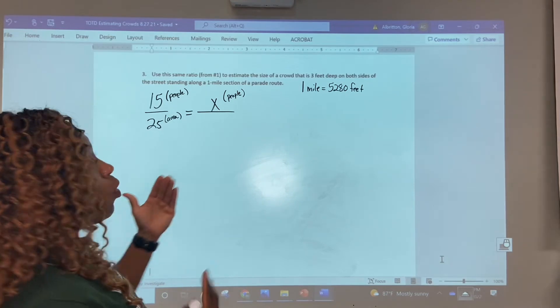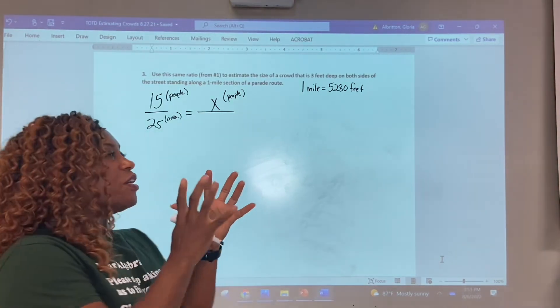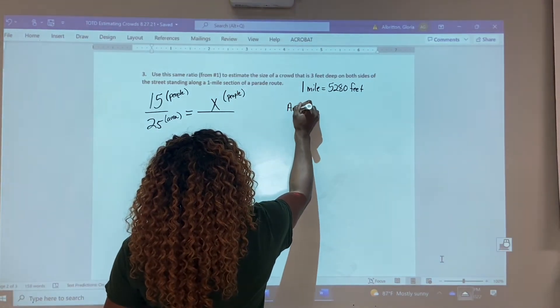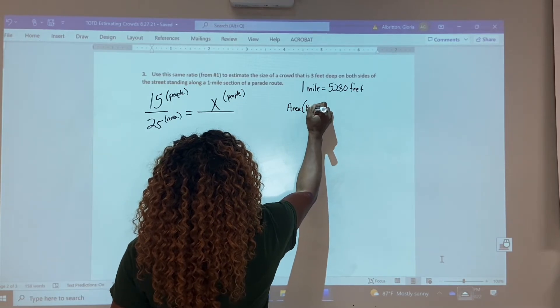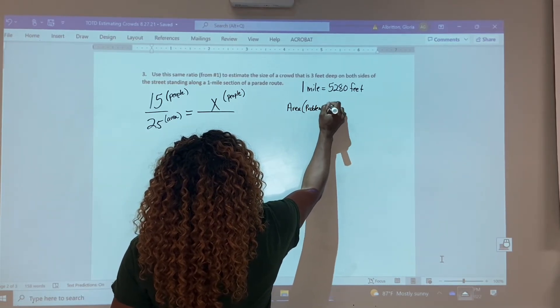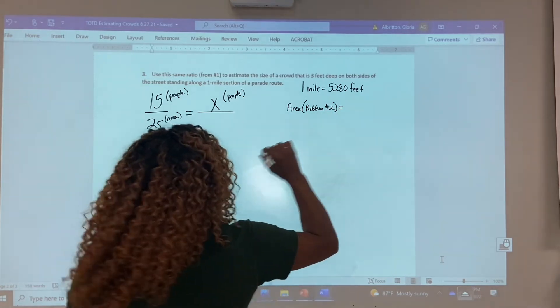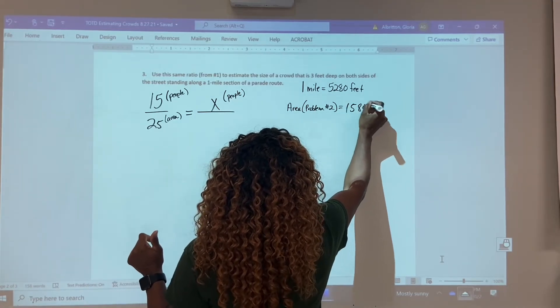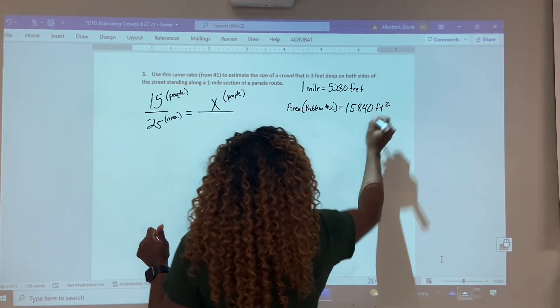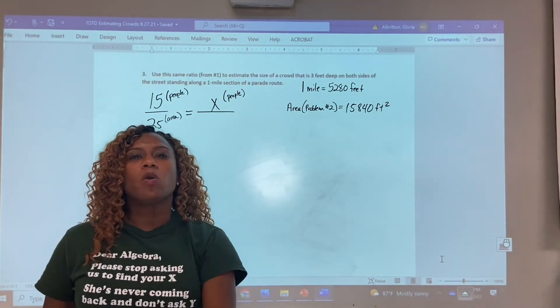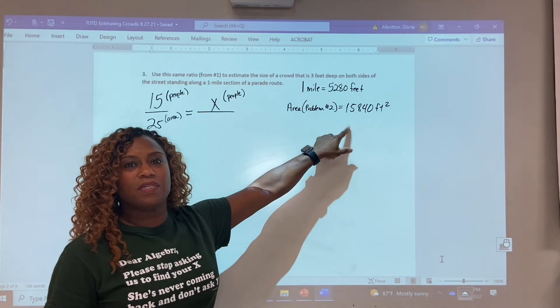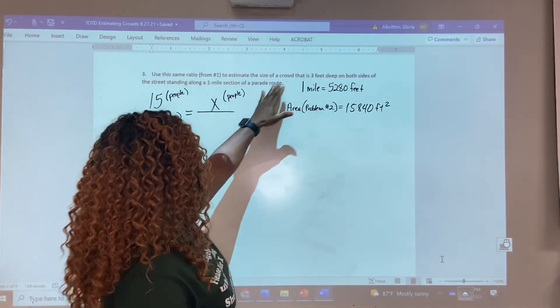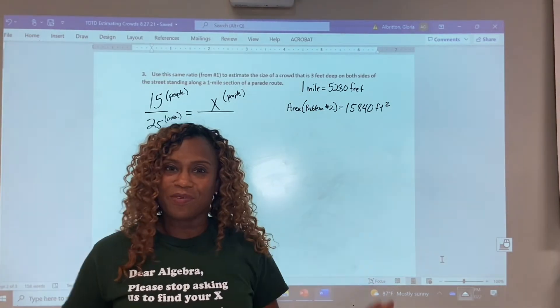Since we're doing both sides, on problem number two, we found out that the area from problem number two turned out to be 15,840 square feet. Well, that was one side of the street. If we're doing both sides of the street, let's double that. If we double that, we'll have the left side and the right side of the street, because it's the same calculations. It's just two sides this time. Hopefully that makes sense.